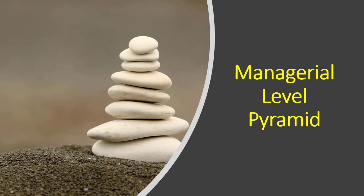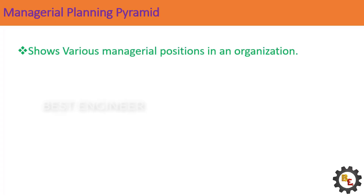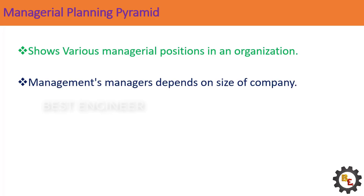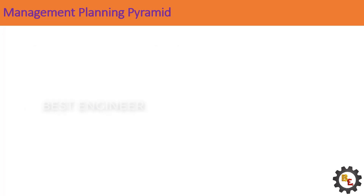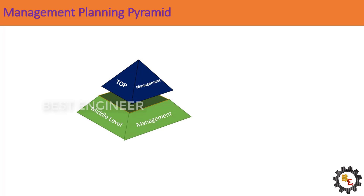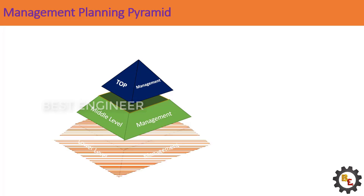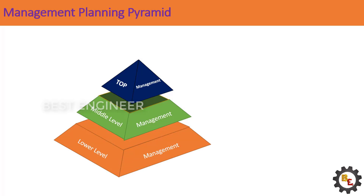Let us see the levels of management pyramid structure and their roles and responsibilities. The term managerial pyramid refers to the division that exists between various managerial positions in an organization. As the size of the company and workforce increases, management also increases. The different levels of management can determine authority and decision-making influence. Levels of management are generally classified into three main categories: top level, middle or executive level, and lower supervisory or operative level of management.